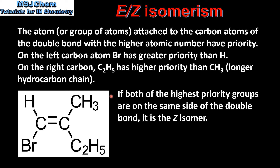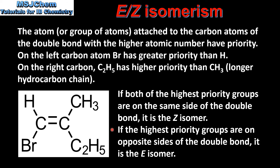If both of the highest priority groups are on the same side of the double bond it is the Z isomer. If the highest priority groups are on opposite sides of the double bond it is the E isomer. In this molecule both the highest priority groups — the bromine atom and the C2H5 group — are on the same side of the double bond, therefore this is the Z isomer.